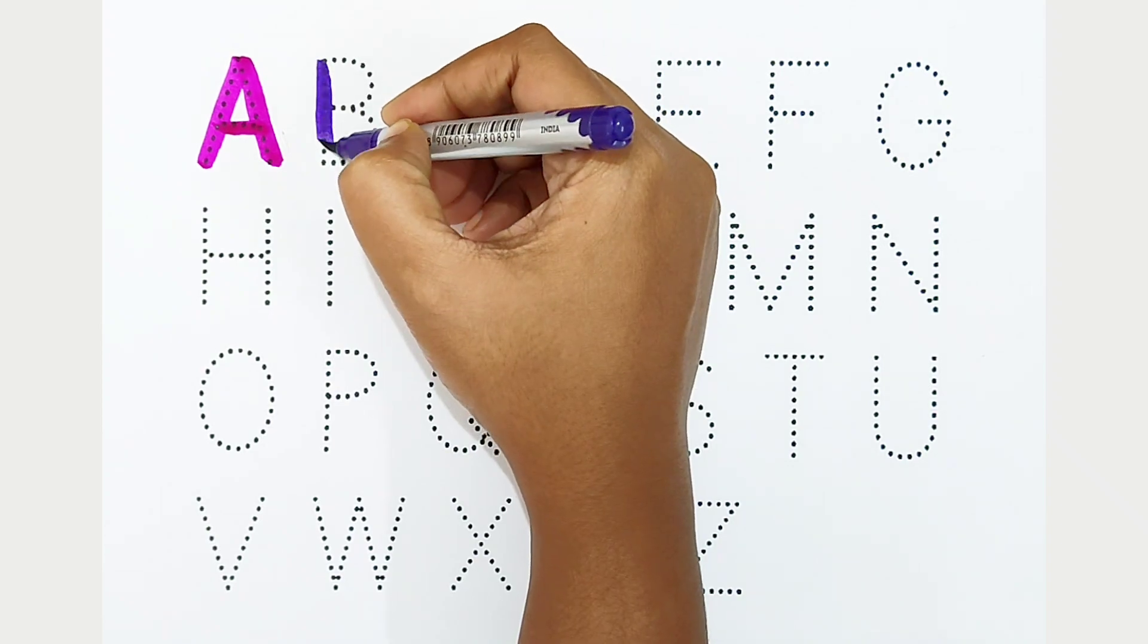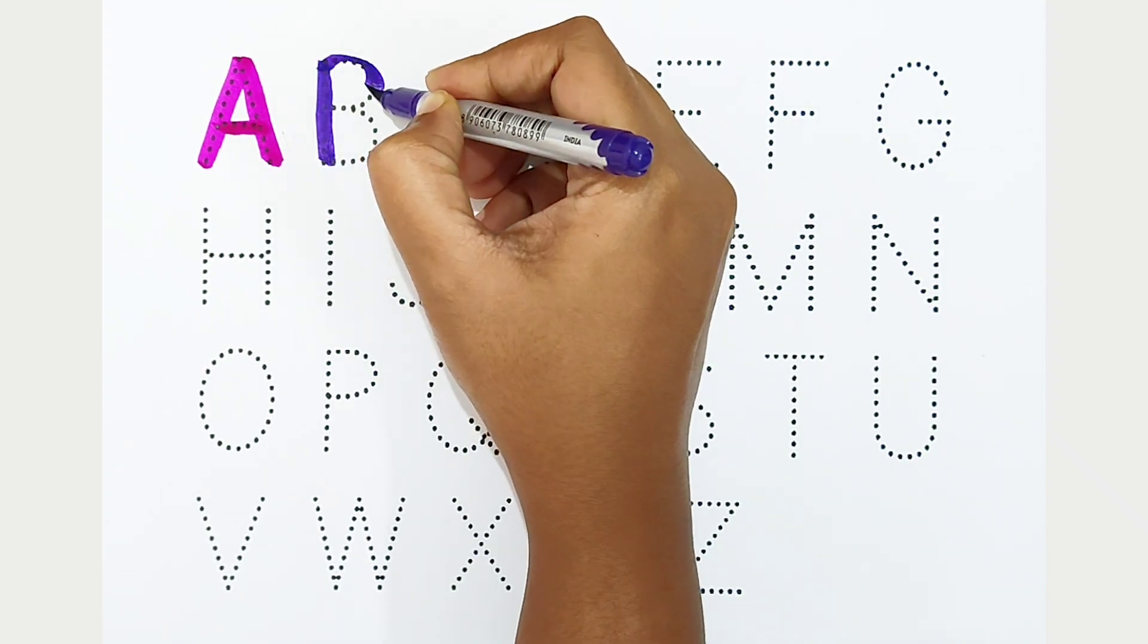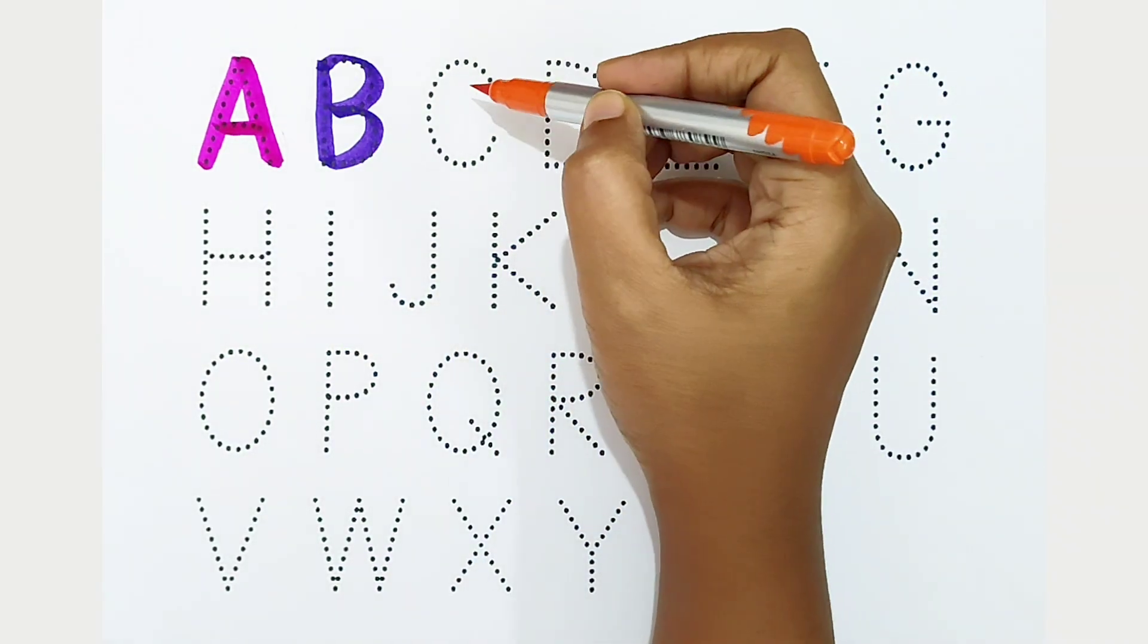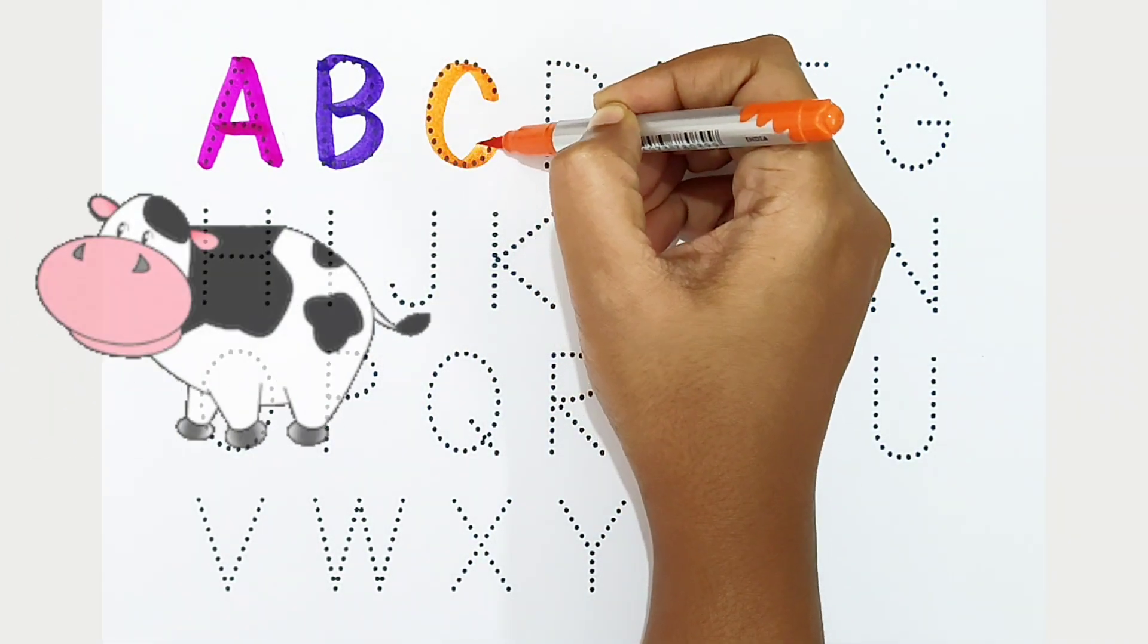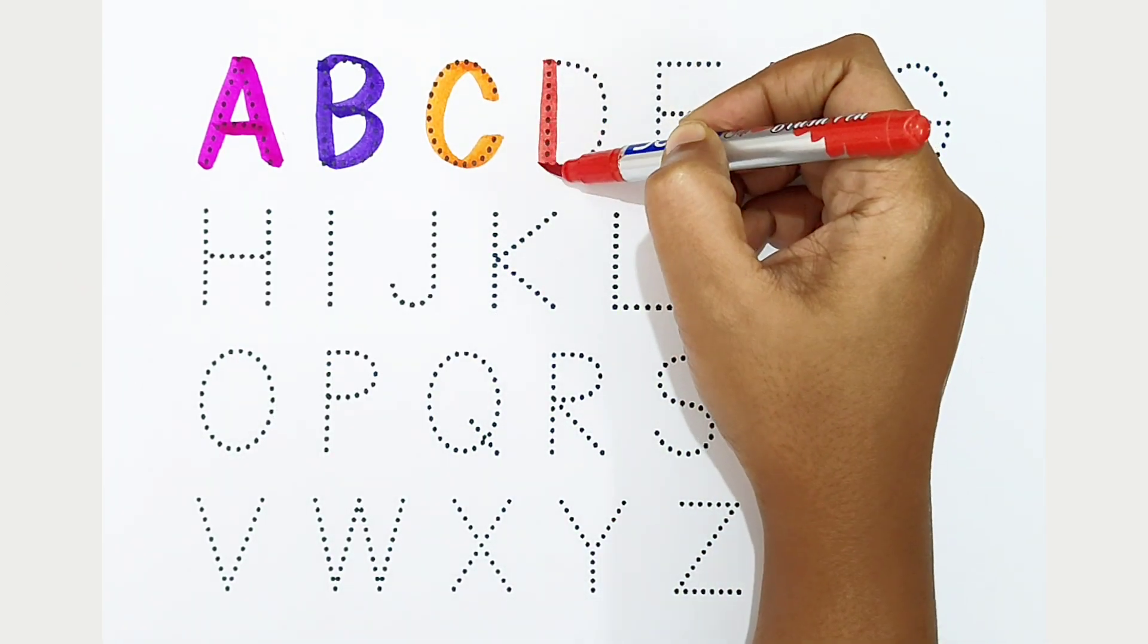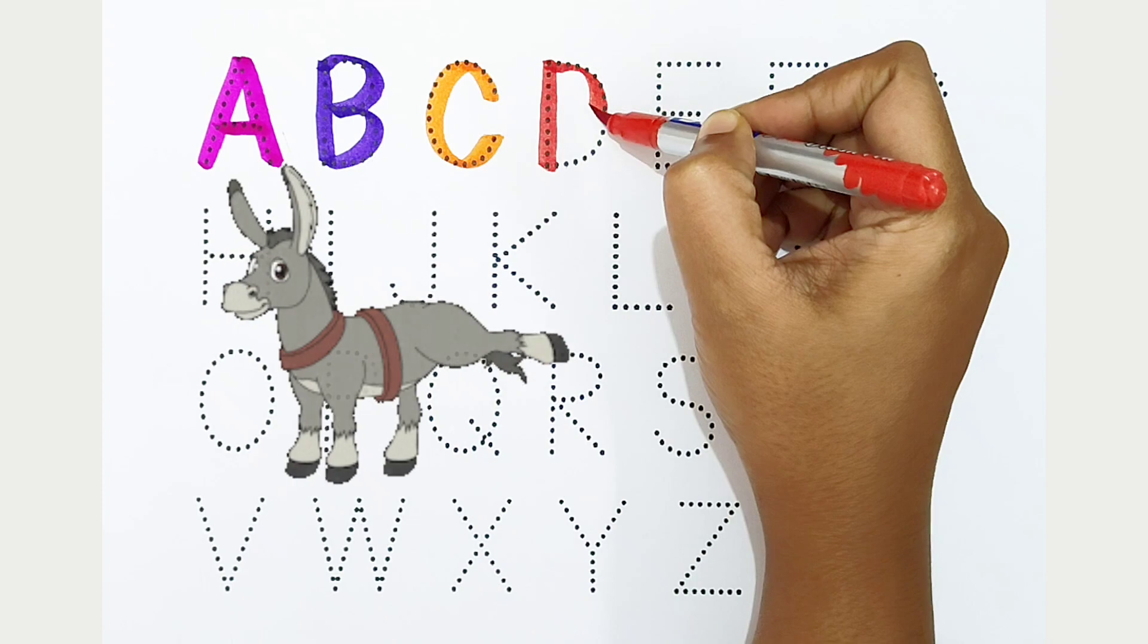violet color. B is for bat. C: orange color. C is for cow. D: red color. D is for donkey.